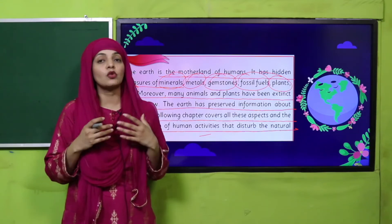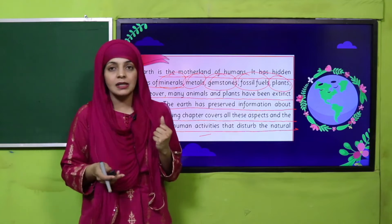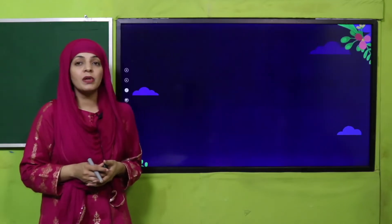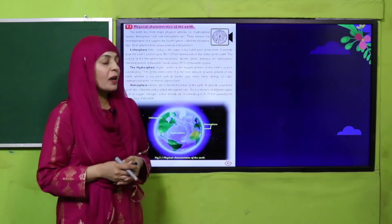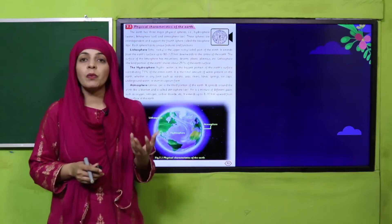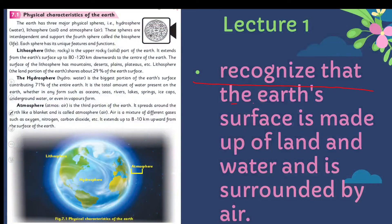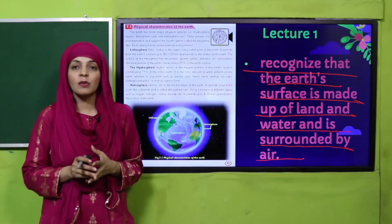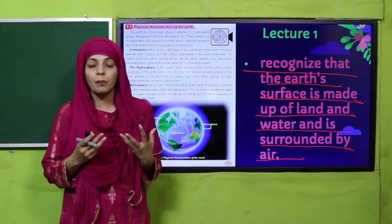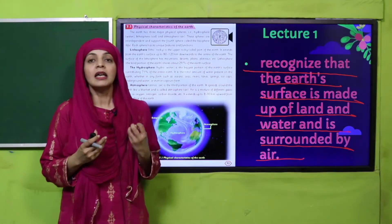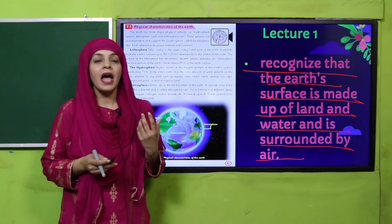This is going to be a really fun chapter. In lecture number one, students will be able to recognize that the earth's surface is made up of land and water, and is surrounded by air. Hum earth ki surface ke baare mein pehle lecture mein padheinge — kis tarikhe se aur kin cheezoh se milkar bani hai.